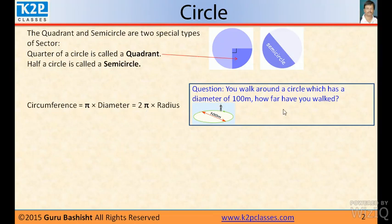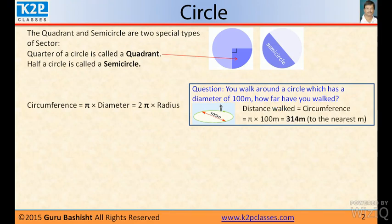Let us see one question. You walk around a circle which has a diameter of 100 meters. How far have you walked? Very simple. You have to walk to the circle. The distance you cover is equal to circumference of the circle. And what is that? That is 2 pi r, where r is 50 here because diameter is 100. Distance walked equal to circumference pi into 100 meters, 314 meters to the nearest meter.